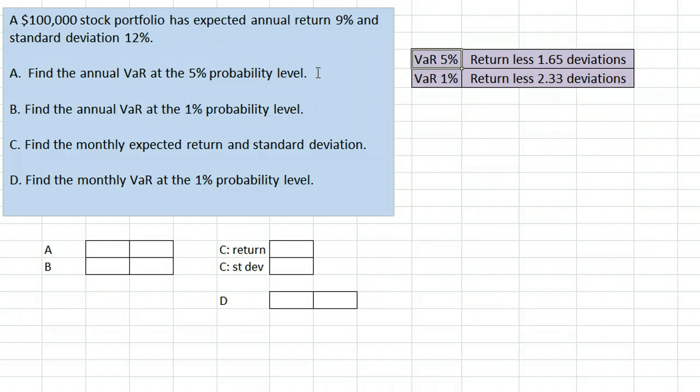To do this we take the return less 1.65 standard deviations. In our case we have the return 0.09 minus 1.65 times the standard deviation 0.12. That gives us negative 0.108 or negative 10.8%.